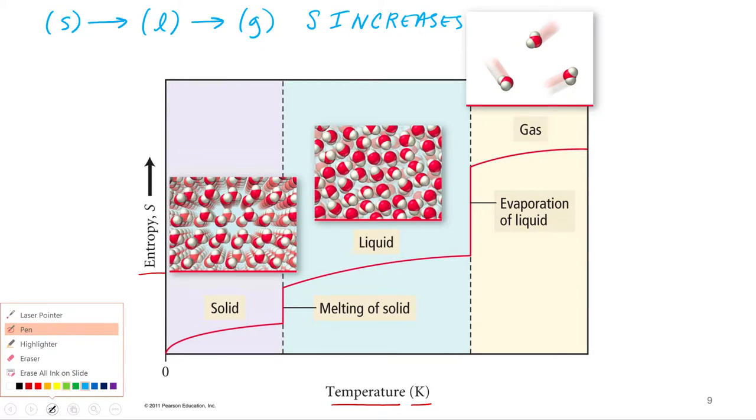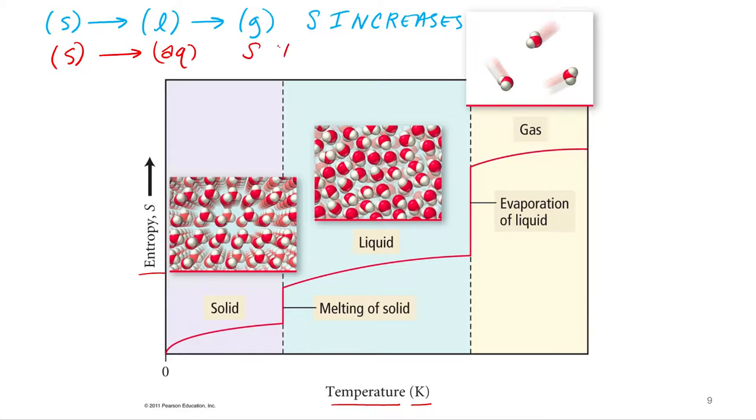Not pictured on this graph, but another one we saw last time was that when something goes from a solid liquid to aqueous, entropy increases as well. Not only do we go from an ionic compound like sodium chloride, which is a crystal, very ordered structure of all those cations and anions, to aqueous ions flowing around, we're also going from a pure substance to a mixture. And so that's more entropic, more disordered, as well.